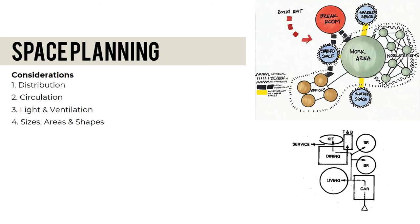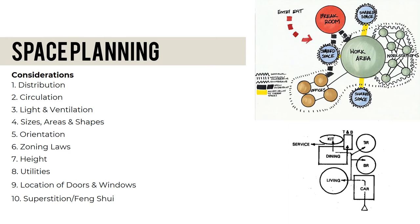You need to consider orientation — which part is exposed to the afternoon sun and which is exposed to Amihan and Habagat winds. Consider zoning laws, height, and utilities including electrical, mechanical, and plumbing. Also consider the structural components, locations of doors and windows, and superstition and feng shui practices — such as the oro-plata-mata in stairs, the positioning of doors, and the orientation of rooms.